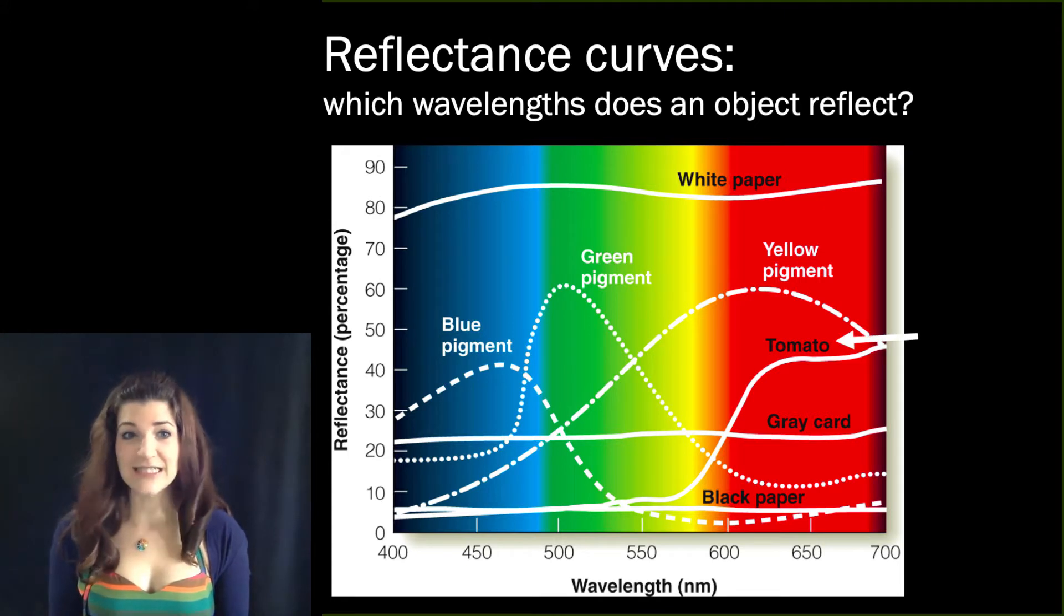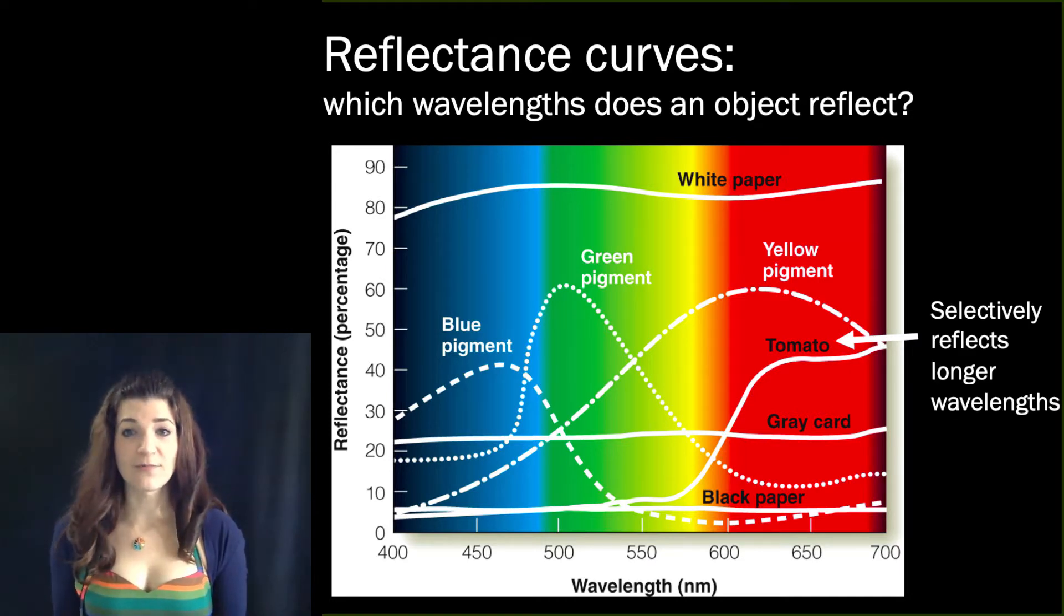So a tomato, for instance, is absorbing wavelengths below 550 nanometers and reflecting those above. So when longer wavelength light is present, they're reflecting off the tomato and that is what hits our eyes, the long wavelengths. The shorter wavelengths are absorbed.